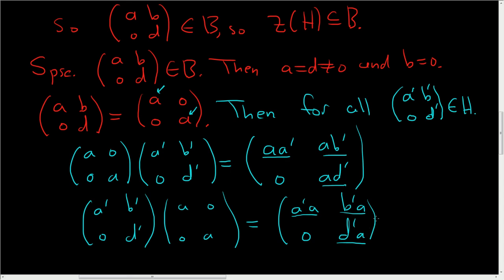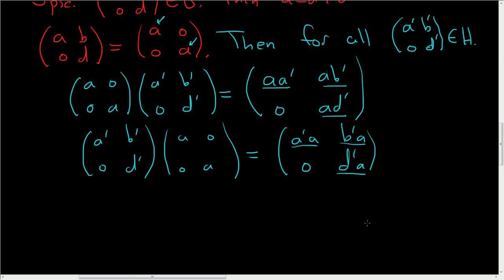So that's good. They commute. We have equality. So (a, b; 0, d) is in the center of H. So B is a subset of the center.